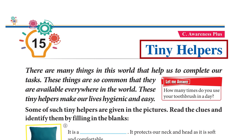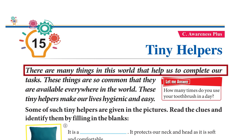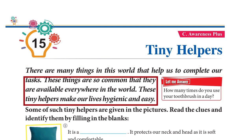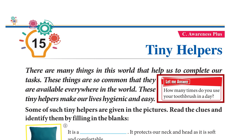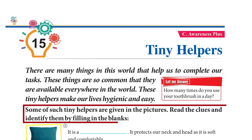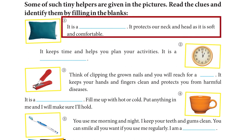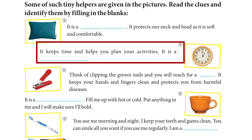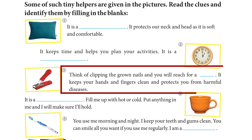Chapter 15: Tiny Helpers. There are many things in this world that help us complete our tasks. These things are so common that they are available everywhere. These tiny helpers make our lives hygienic and easy. How many times do you use your toothbrush in a day? Read the clues and identify: a pillow protects our neck and head as it is soft and comfortable. A wall clock keeps time and helps you plan your activities.